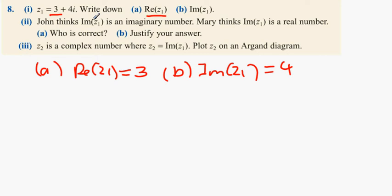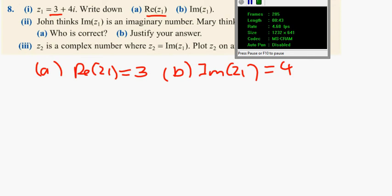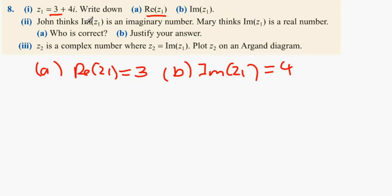John thinks the imaginary part of Z1 is an imaginary number. Mary thinks the imaginary part of Z1 is a real number. Who is correct? Well, it's 4, and 4 is a real number. Remember, you're counting the number that comes in front of the i, not the i itself. So Im(Z1) is 4. Mary is correct. Justifying our answer: Im(Z1) equals 4, and 4 is a real number.